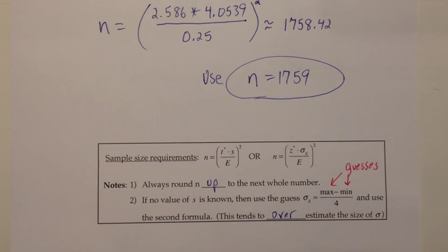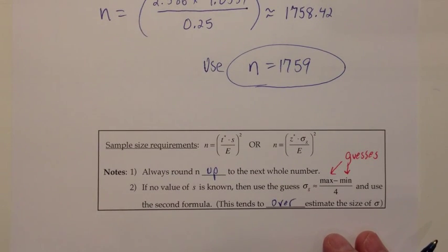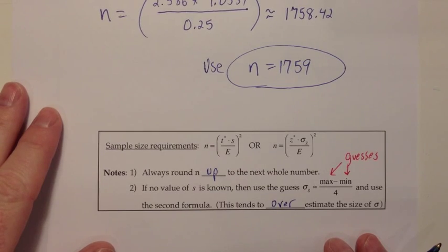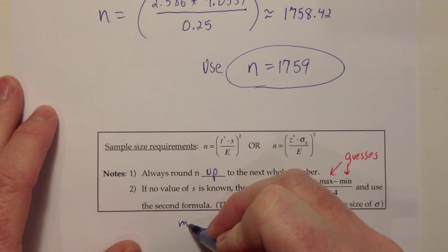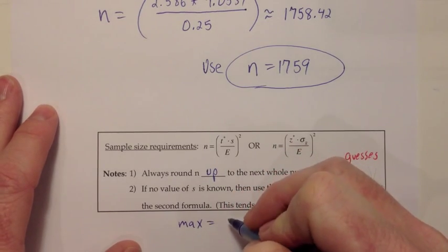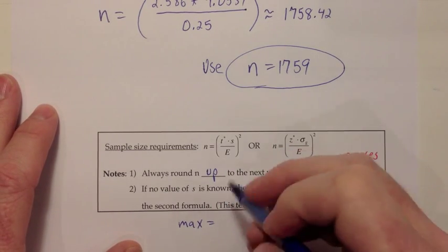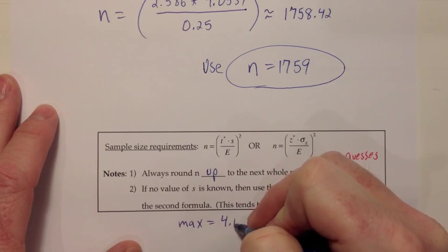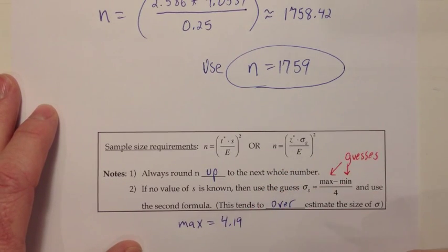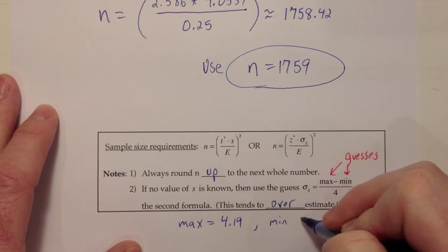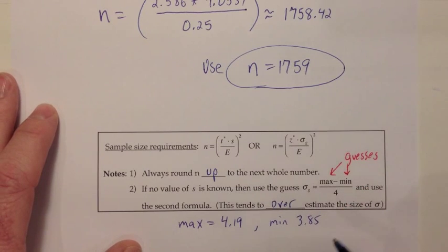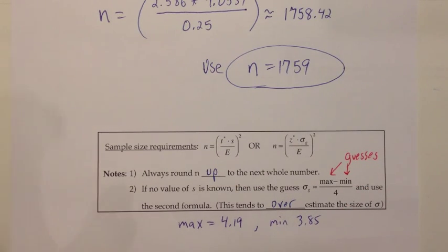So just a quick example of how this might go down. Let's suppose that you were going to do a problem about gas prices, and you're trying to figure out the sample size you need. You might think about, what is my guess for the maximum? Perhaps the most expensive price that you've seen recently was $4.19. And then you think about, what was the cheapest price I've seen anywhere? Maybe that cheapest price was $3.85. So you're just thinking about, what is my guess of the min and max, just based on my experience?